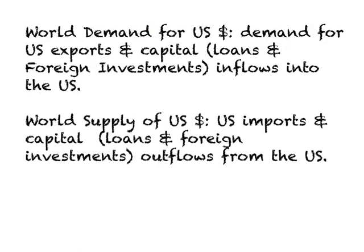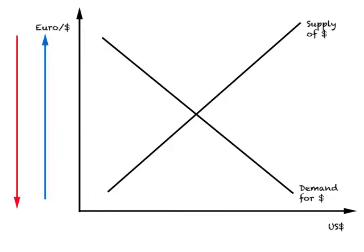Now let us look at the typical demand and supply diagram for the US dollar. On the horizontal axis we have the amount of US dollars in the world market, and on the vertical axis we have Euros per US dollar. We have a demand curve for US dollars — which represents exports of goods and services by the US — and a supply curve of dollars, which is supplied through imports of goods and services into the US.